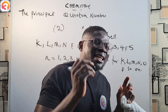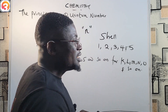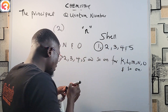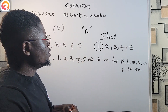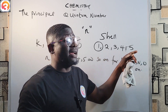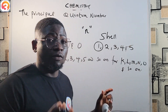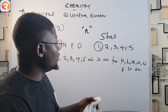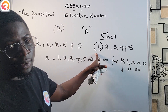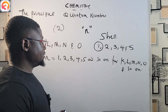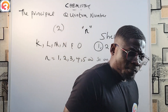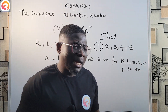Another thing you need to know is that the least possible value for the principal quantum number is 1. This is the least possible value the principal quantum number can have. Other values could be 2, 3, 4, 5, 6, 7 and so on, but the least value is 1.